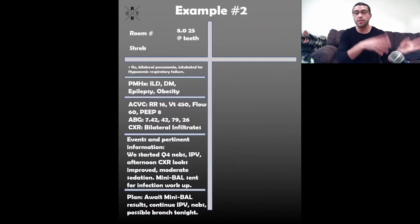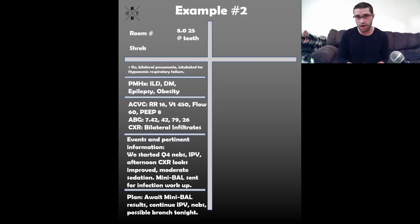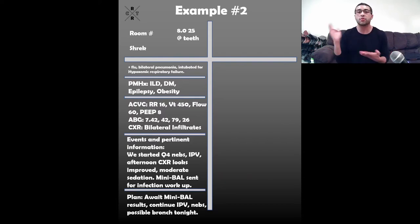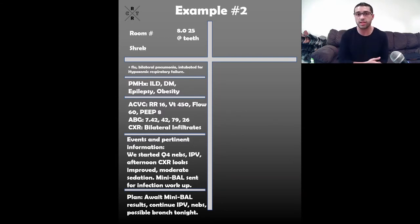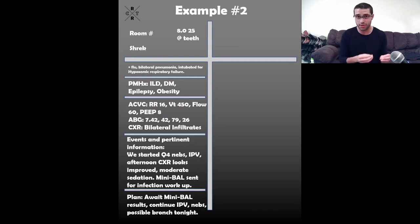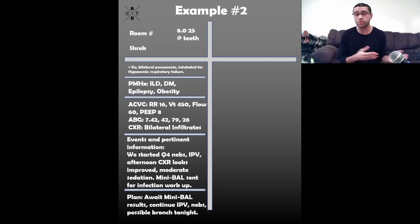Example two — patient Shrek. He's flu positive with bilateral pneumonia and was intubated for hypoxemic respiratory failure. Past medical history includes interstitial lung disease, diabetes, epilepsy, and obesity. You need to know at least the respiratory history — what's pertinent and relevant to our job. As time goes on, you'll see that many other organ systems — the brain, the heart, the kidneys — are all going to affect the respiratory system.